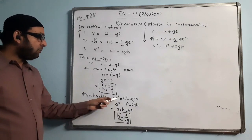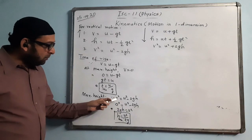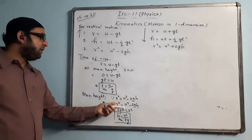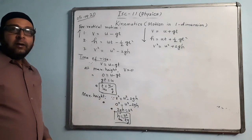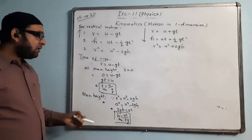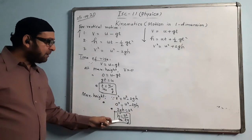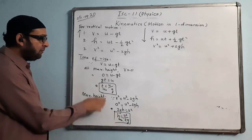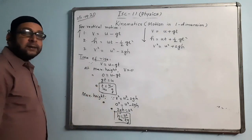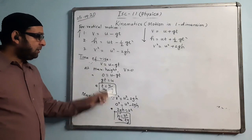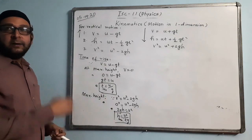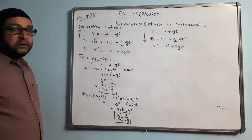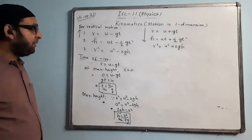To summarize: starting from v² = u² − 2gh and putting v = 0, we get h_max = u²/2g directly. Or starting from v = u − gt and putting v = 0, we get t_rise = u/g. In problems we can either derive these step-by-step or use the direct formulas.